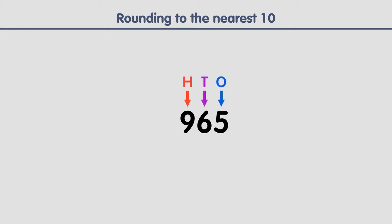Let's look at another example. First, identify the digit in the tens place — it's a six. Then take a look at the digit to the right — it's a five. Five is greater than four, so we increase the six in the tens place by one, turning it into a seven. Finally, replace the digits to its right with zeros. This is the result.